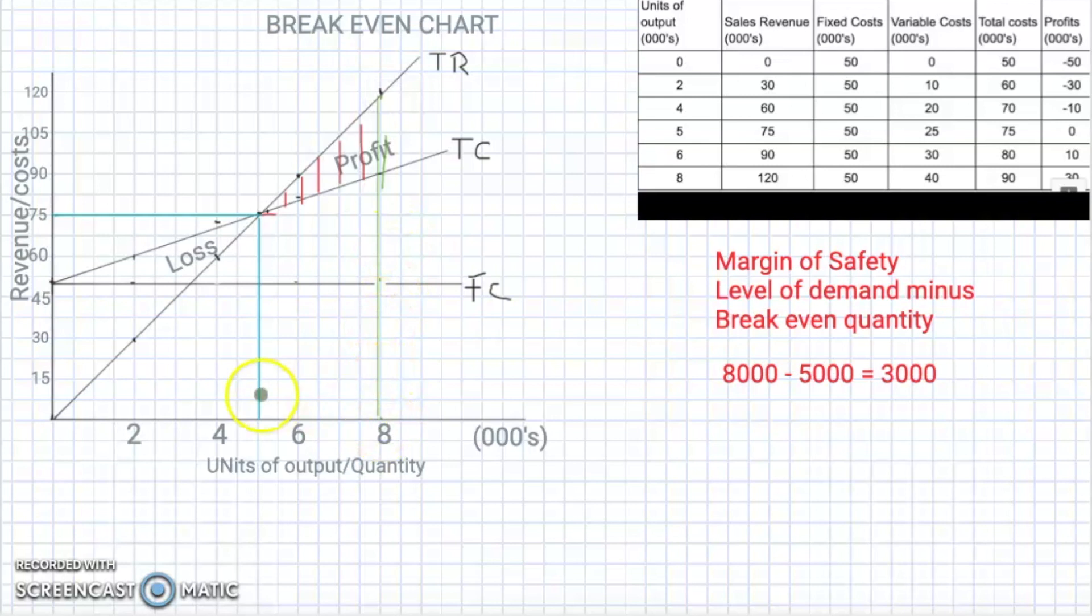So this is eight thousand, this is five thousand. Right between this, let's use red here. Between this and this would be what is called the margin of safety. Right here we know that we can play with three thousand units.